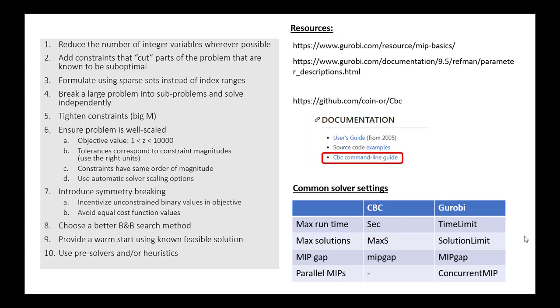Gurobi supports concurrent mixed integer program solving. CBC does not. In Gurobi, if you want, let's say you have a computer with multiple cores, you can tell it that it can solve up to the number of cores that you have concurrent mixed integer programs.